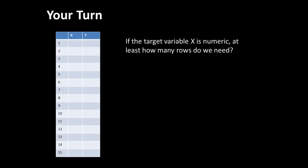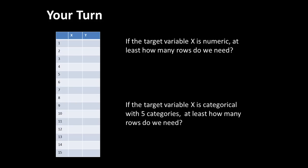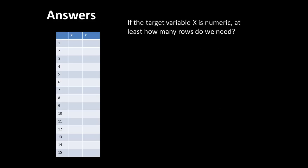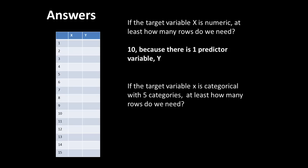Your turn again. If the target variable X is numeric, at least how many rows do we need? And if the target variable is categorical with five categories, how many rows do we need? I would encourage you to stop the video, look at the concepts, and arrive at your own answers before proceeding. The answer for the first one is 10, because it's numeric and you need 10 times the number of predictor variables, which is one — so 10. If the target variable is categorical with five categories: 6 × 5 × 1 = 30.